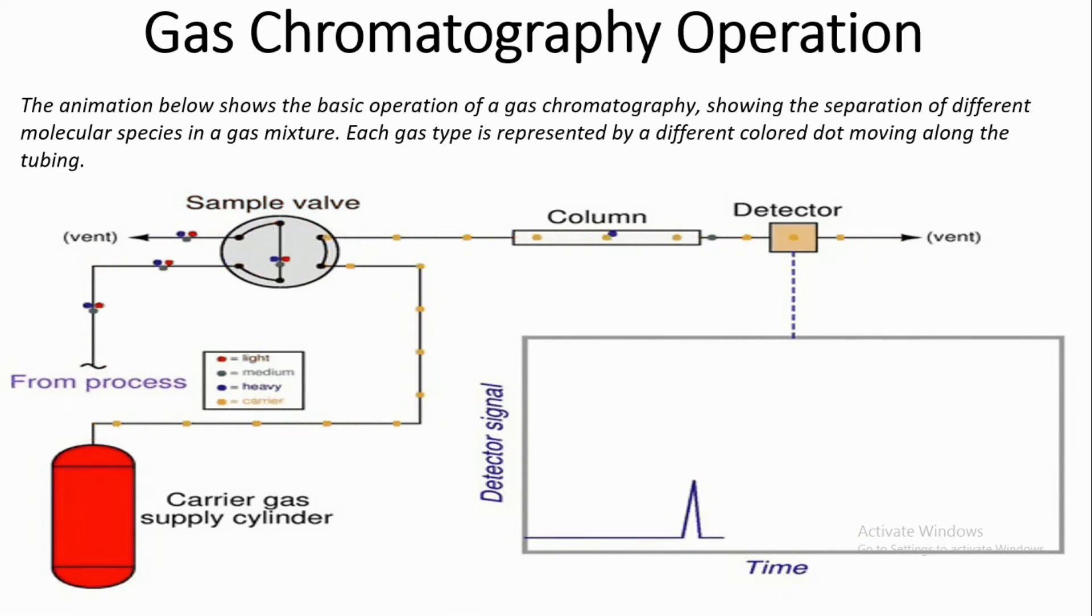All the while you can see the chromatogram developing, a peak appearing each time one of the components reaches the detector. Each chemical component—light, medium, heavy—is thus identified by its place in time when a peak appears on the chromatogram, while the concentration or quantity of each component is discernible by the area integrated underneath the peak.